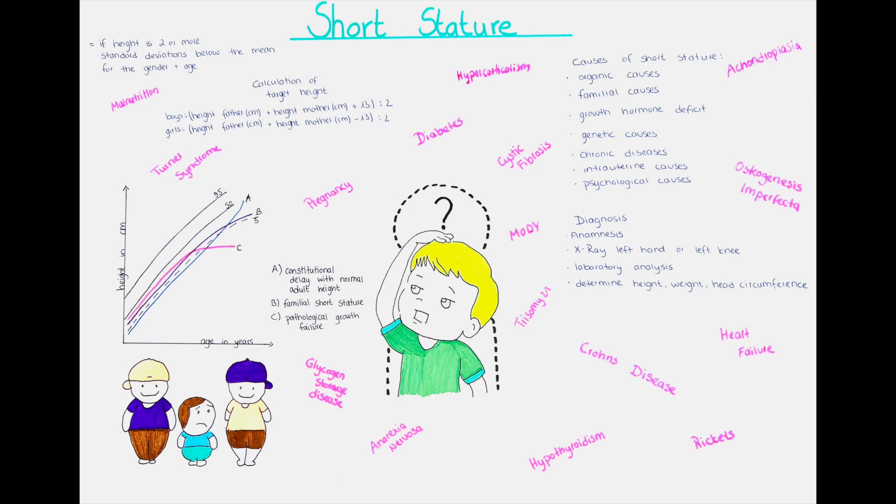All those diseases we talked about so far were causes for primary short stature, so that the child was born with a cause for it. Other causes are secondary causes that lead to a child being of shorter stature.